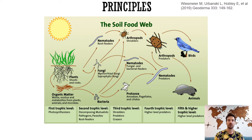Soil fauna affects soil organic carbon storage by affecting soil structure and by incorporating organic residues into soil where they become available to the soil microbial community. Soil microfauna can protect soil organic matter against mineralization by mixing it with soil particles. Earthworm feeding activities have been suggested to induce long-term stabilization of soil organic carbon, as carbon is protected from microbial attack by the formation of microaggregates within the macroaggregates in earthworm casts.